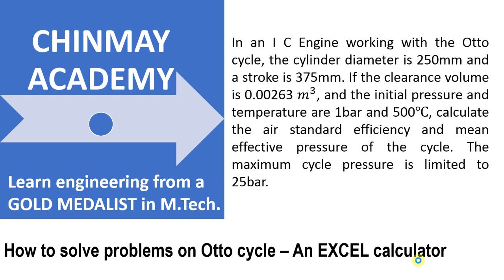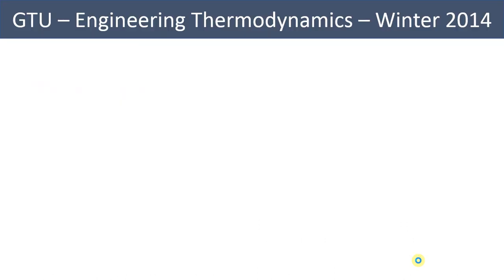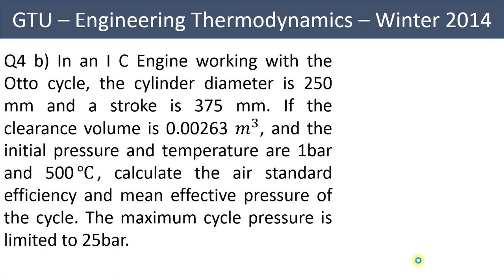In this video, we'll try to understand how to solve problems on the Otto cycle, and we have prepared an Excel calculator also for this. So let us first see the problem statement. In an IC engine working with the Otto cycle, the cylinder diameter is 250 mm and the stroke is 375 mm. If the clearance volume is 0.00263 cubic meters and the initial pressure and temperature are 1 bar and 50 degrees centigrade respectively, find the air standard efficiency and mean effective pressure of the cycle. The maximum cycle pressure is limited to 25 bar.